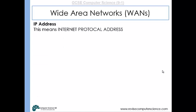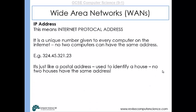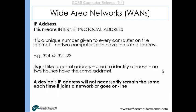An IP address is an internet protocol address, and it's literally just a unique number that is given to every computer as it comes onto the internet. No two computers can have the same address, and it's simply the same idea as having our postal addresses at home — every house in the country will have its own address just so that post can be delivered to those houses. When we're trying to send data from one computer to another, we will need an IP address so that we know exactly where to send that data. However, a device's IP address might not remain the same each time it joins a network.